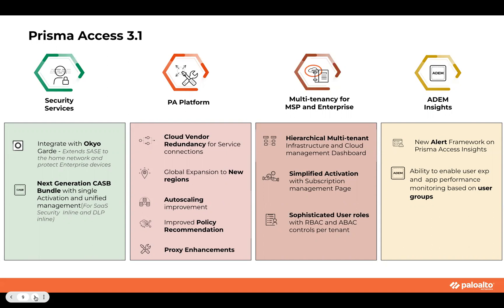The next key feature under security services is the next generation CASP bundle. The components of the CASP bundle can be purchased together — that is SaaS inline, DLP inline, SaaS API, and DLP API — and can be purchased as an add-on to Prisma Access.